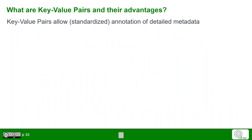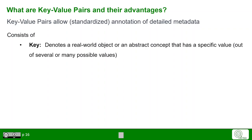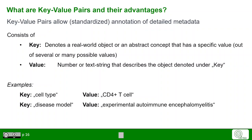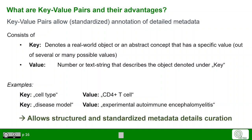And what are key-value pairs and their advantages? Key-value pairs allow some standardized annotation of more detailed metadata. The concept consists always of a key, which denotes any real-world object or abstract concept that has a specific value out of several or many possible values. The value is the specific number or tag string that describes the object denoted under the key. Examples would be: what is the cell type? — the specific value could be a CD4-positive T cell. Or, what is the disease model? — the specific value could be experimental autoimmune encephalomyelitis. This allows structured and standardized metadata detail curation.